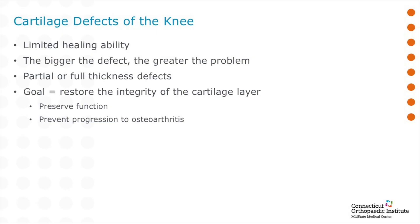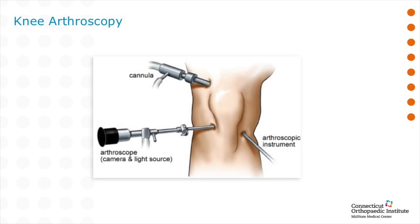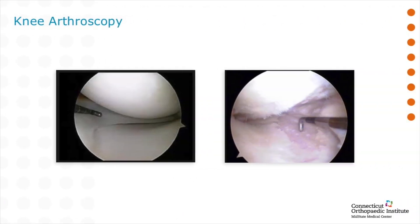If all these treatments have failed, it's important to understand that cartilage defects of the knee have a very limited ability to heal — the bigger the defect, the bigger the problem. Our goal is to restore your function and to prevent further deterioration of your knee and progression to arthritis. The most commonly performed initial surgical treatment is a knee arthroscopy, involving a camera inserted into the knee through a very small incision and arthroscopic instruments introduced as well. The picture on the left shows a normal appearing knee, while the picture on the right shows loss of cartilage with a meniscal tear — the problem causing your pain.